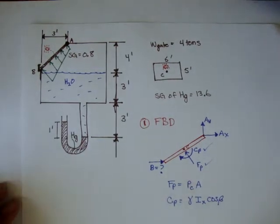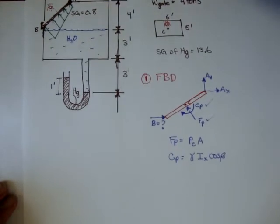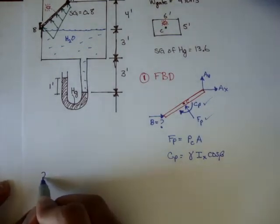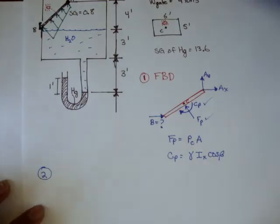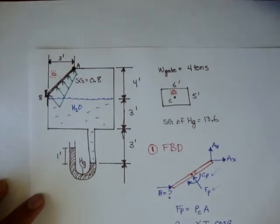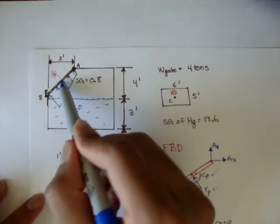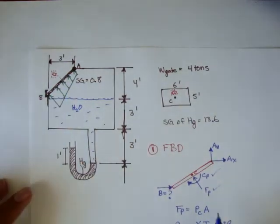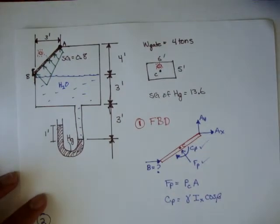And, now that we have the free body diagram set up, we can actually go to step two. And step two, I'll put up here, step two is to find the pressure at the centroid of this gate. And, we need that, we need that to find the force.